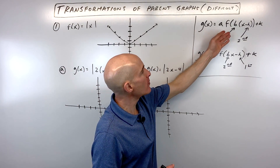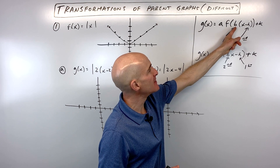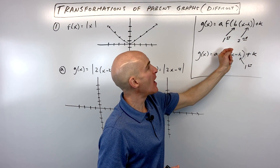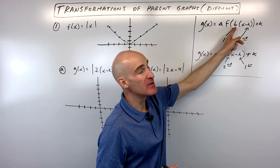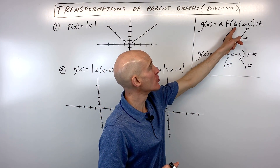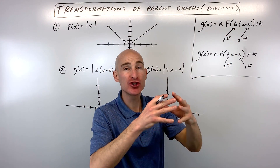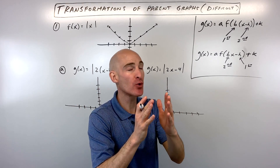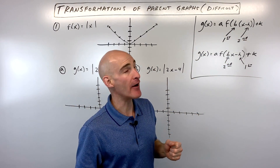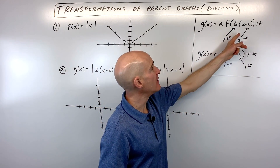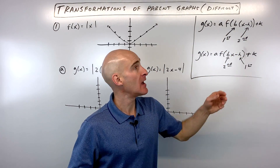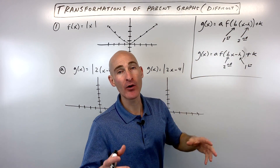When it's in this form where the b value is factored out, you want to take the b into consideration first, meaning that you're going to either stretch horizontally or compress horizontally the x-coordinates of your graph, and then follow that up by shifting it left or right — that's what the h indicates.